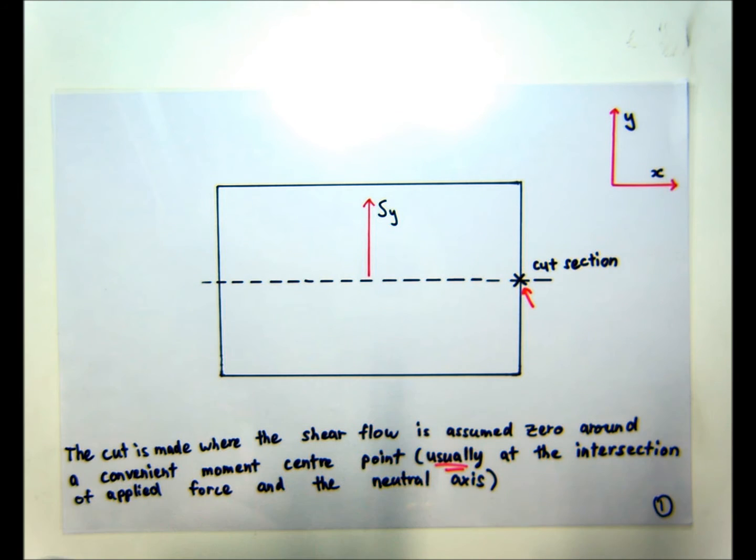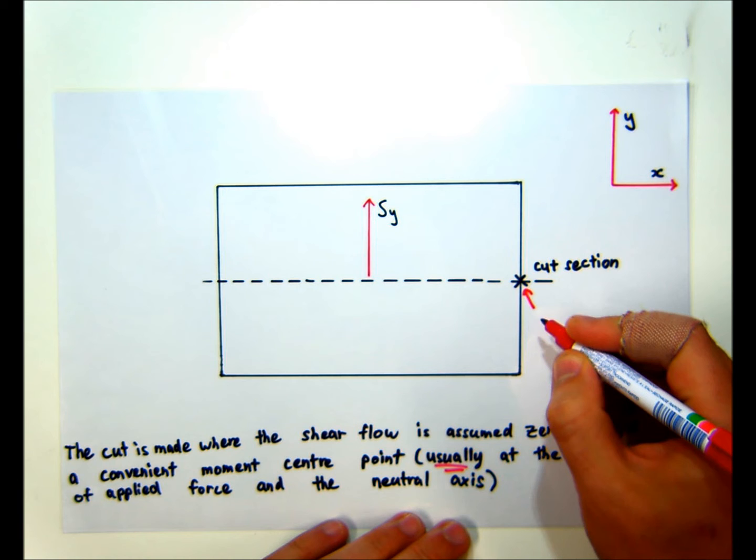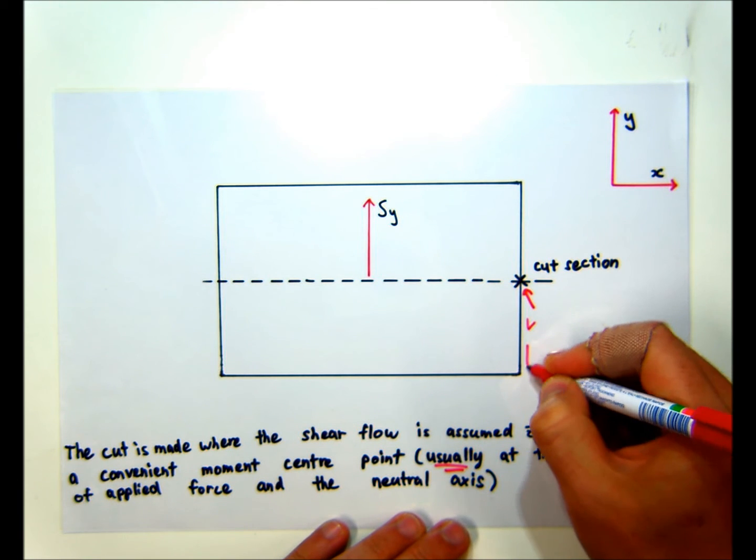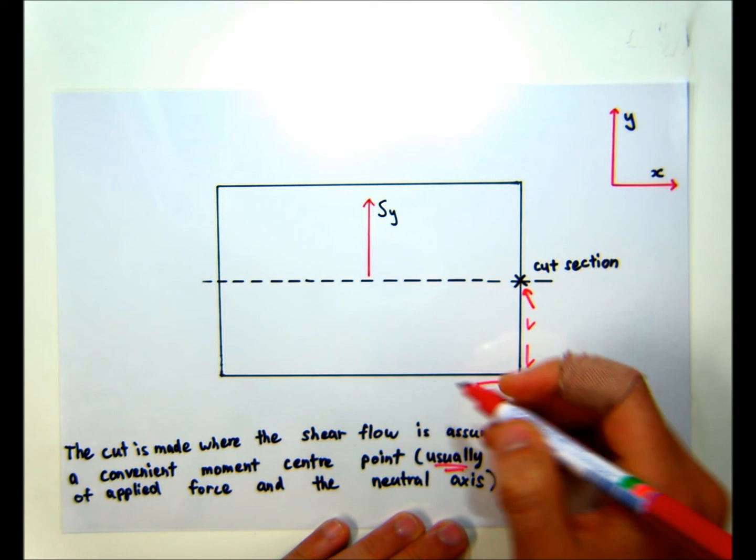We can then go about calculating the QBs around the section. And if you've done enough of these examples, you'll know that the basic shear flows will look something like this.